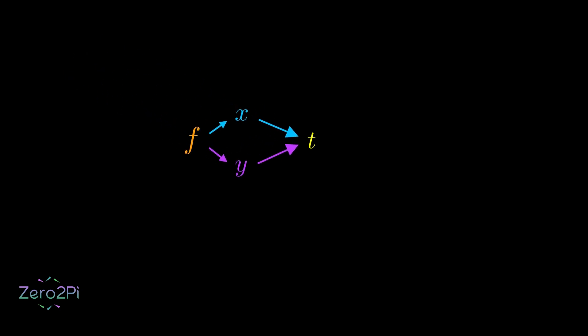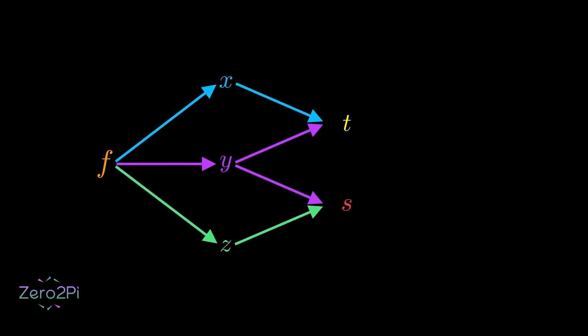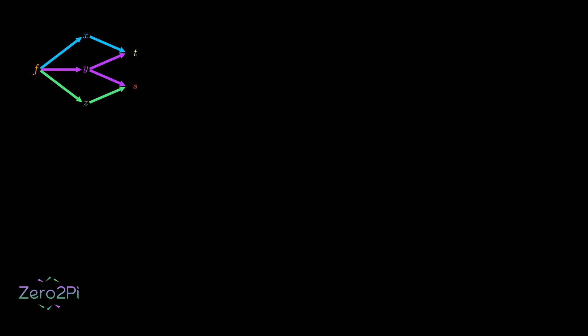All right, let's push this one step further. What if we have an even more complex system? u depends on x, y and z. But x only depends on t, z only depends on s and y depends on both t and s. How do we describe the total change in u?